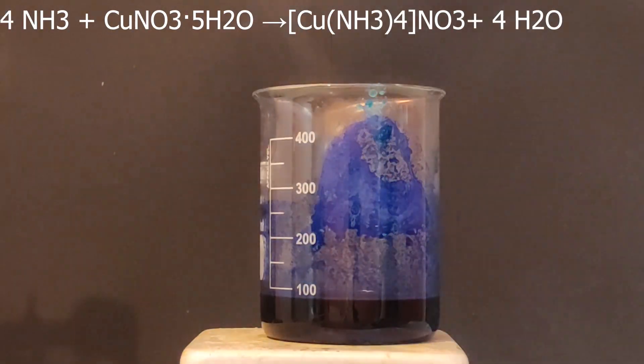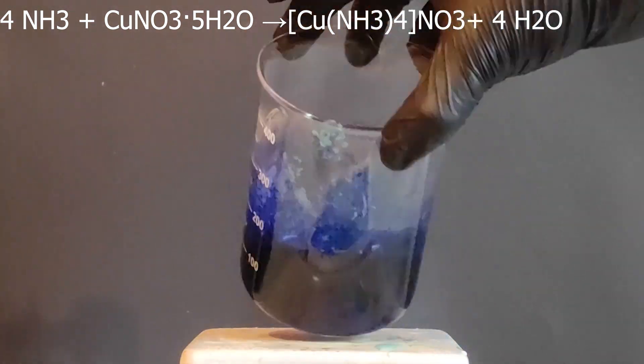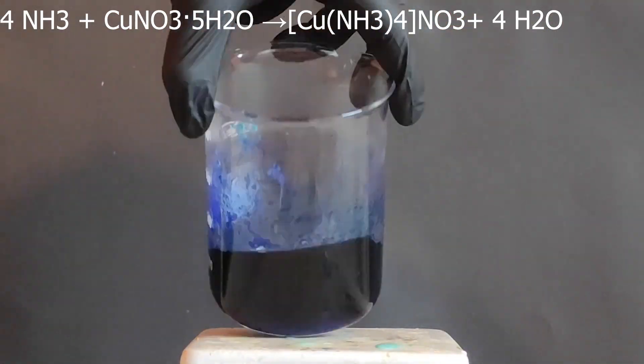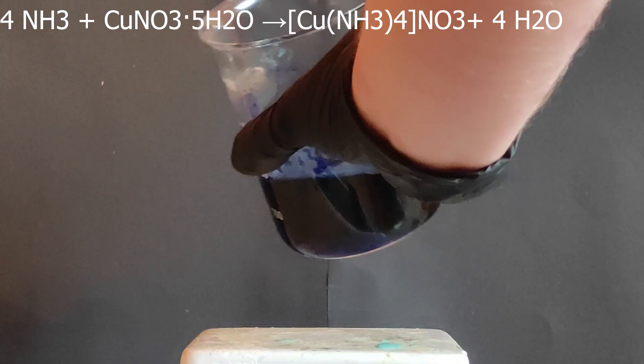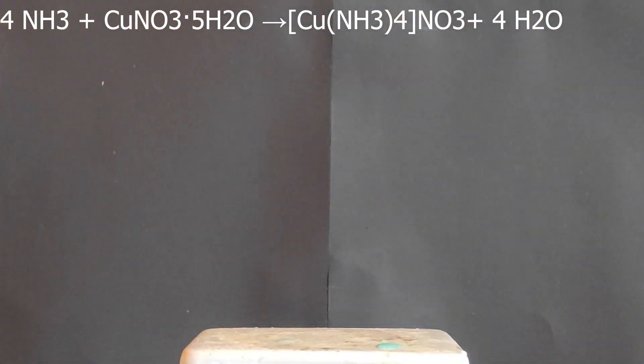As I add the ammonia, the light blue precipitate redissolves and the dark color emerges. I keep adding the ammonia until everything has dissolved. So there's still some stuff undissolved, but I figured that it shouldn't impact the final product too much. However, if you want a pure final product, make sure that your solution is clear.